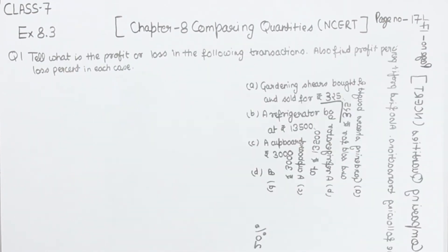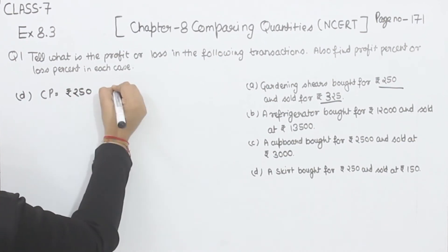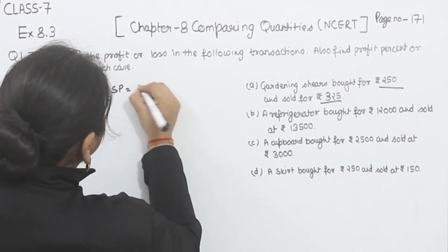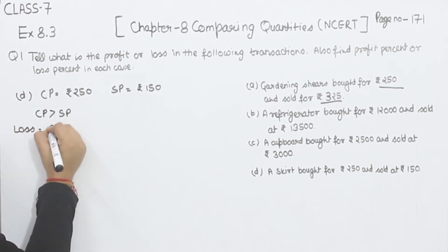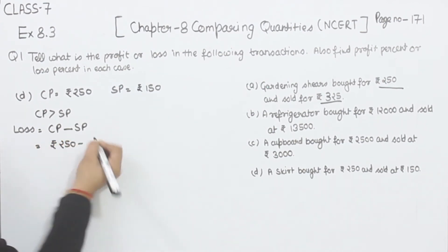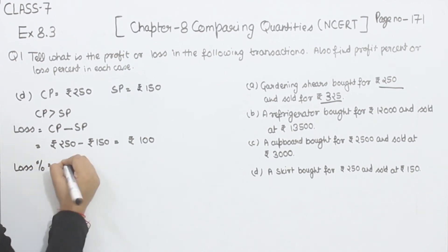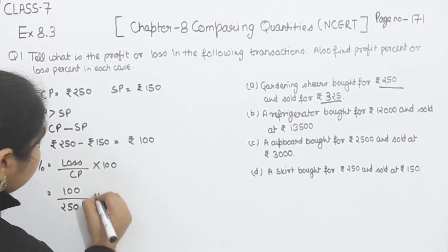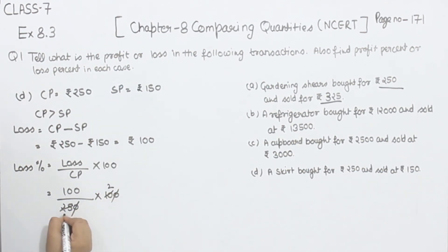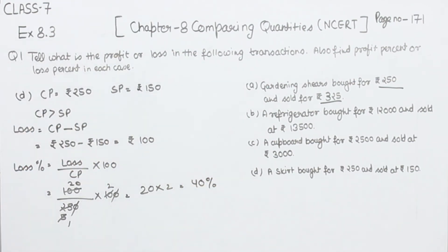Now comes part D. A skirt is bought for rupees 250, so the cost price is rupees 250, and selling price is rupees 150. Here cost price is greater than selling price, so we are having loss. The formula for loss is cost price minus selling price: rupees 250 minus rupees 150, so the loss is rupees 100. For loss percent: 100 divided by 250 multiplied by 100, which gives 40 percent. Loss is 40 percent for part D.